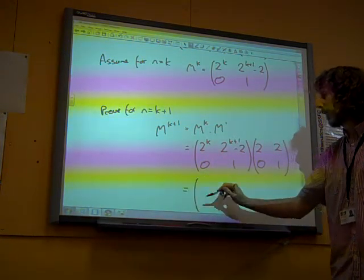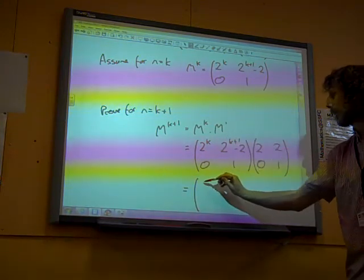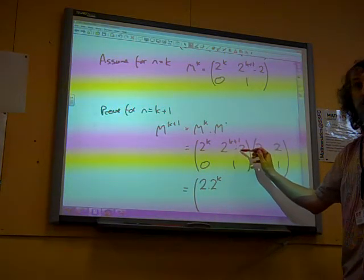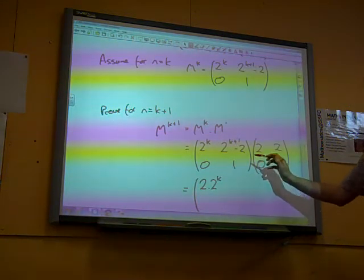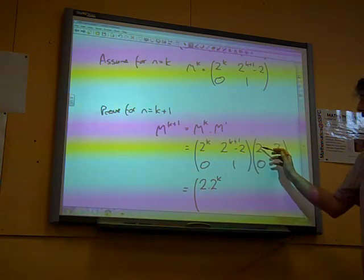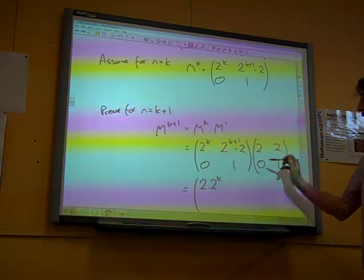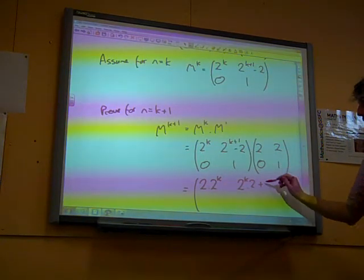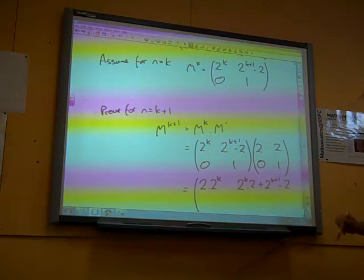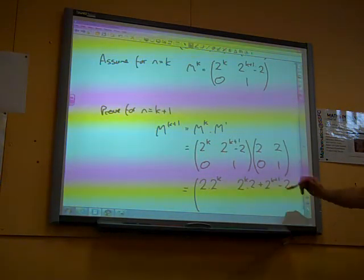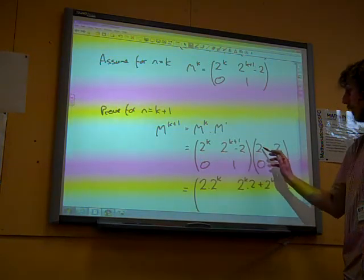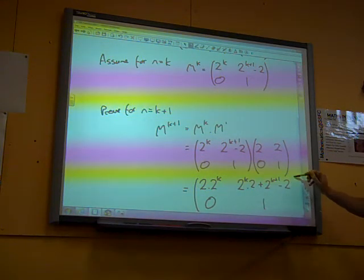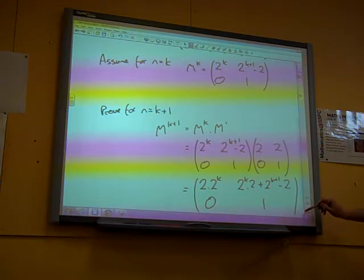We multiply it together, it's just 2 by 2 matrices. This is 2 to the k times 2, plus 2 to the k plus 1 minus 2 times 0. Here we've got 2 to the k times what we're doing now, this one to this one. So 2 to the k times 2, plus 2 to the k plus 1 minus 2 times 1. On the bottom line, we've got the bottom row times the first column, so 0 times 2 plus 1 times 0 is 0. And 0 times 2 plus 1 times 1 gives us 1 there.